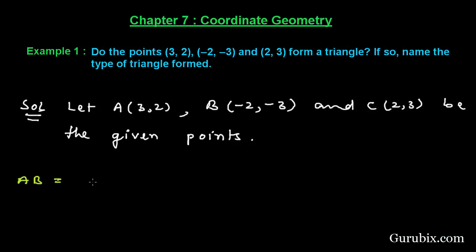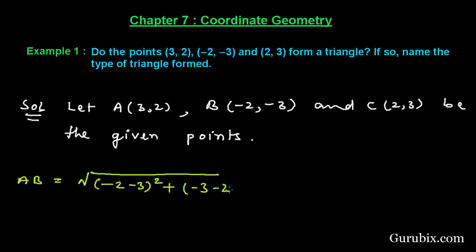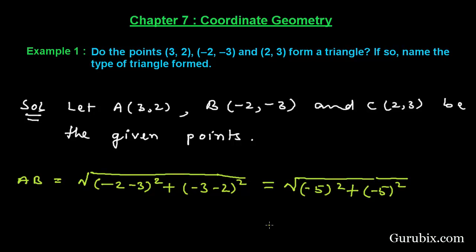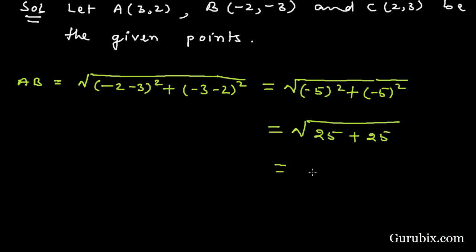First of all we shall find the distance AB by using the distance formula: square root of (x2 - x1)² + (y2 - y1)². Here x2 is -2, x1 is 3, y2 is -3, and y1 is 2. So we get square root of (-2-3)² + (-3-2)², which equals square root of (-5)² + (-5)², giving us 25 + 25.